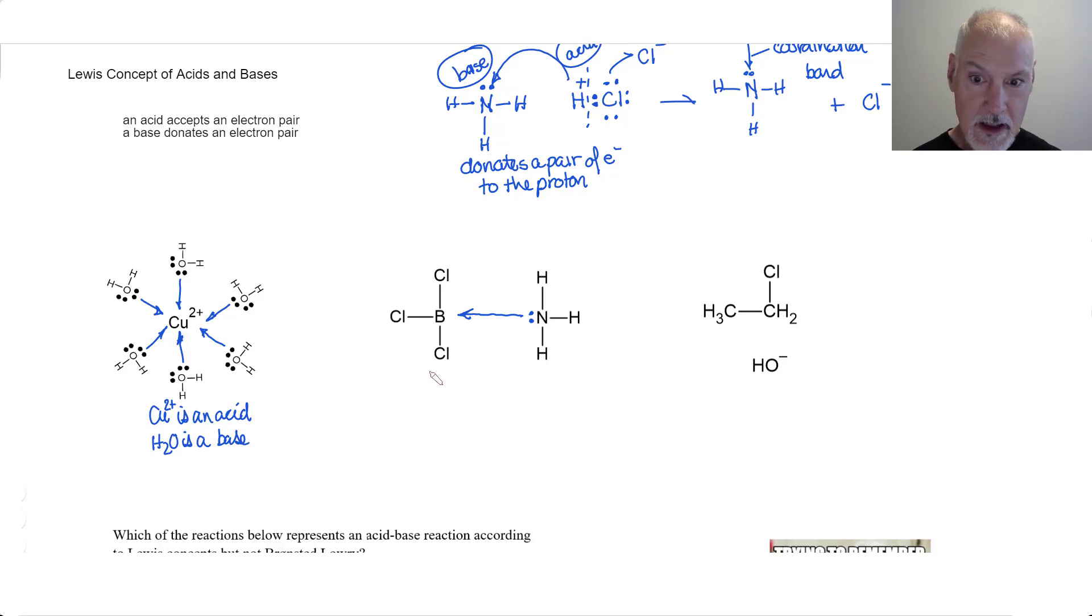And as a result, the boron accepts those pairs of electrons. So, BCl3 is an acid. And our ammonia is a base.